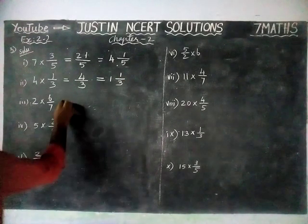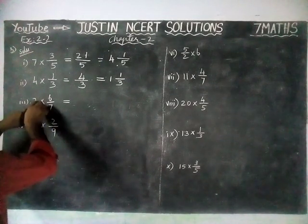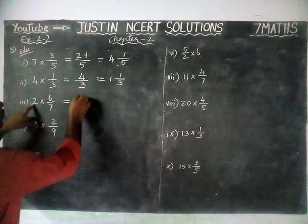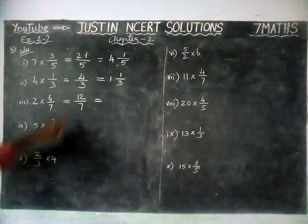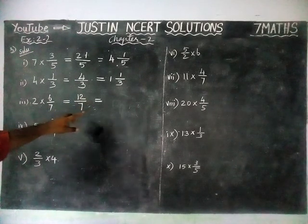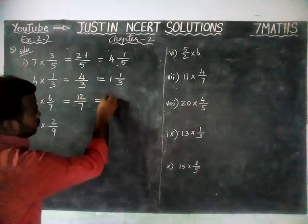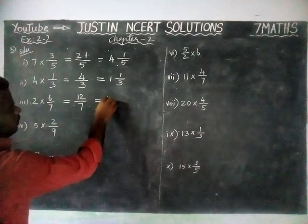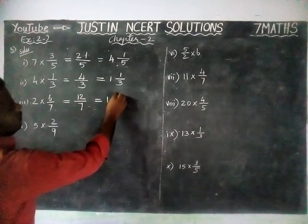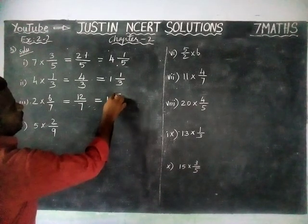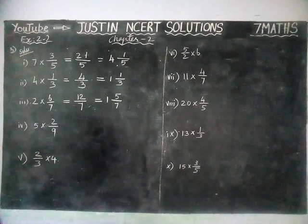Next question: 2 into 6 by 7. We multiply to get 12 divided by 7. This is also an improper fraction, so we convert it into a mixed fraction. In 12, there is only one 7, so that is written in the whole part. Remaining: 12 minus 7 is 5, so the remainder 5 divided by the divisor 7 gives denominator 7. The answer is 1 and 5 by 7.